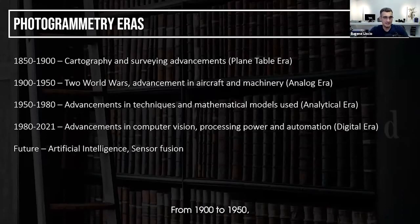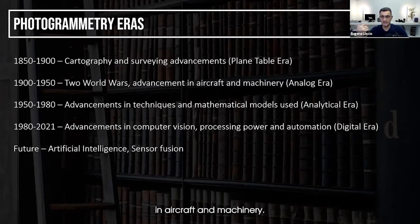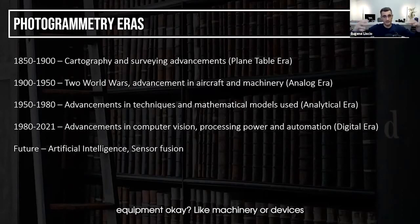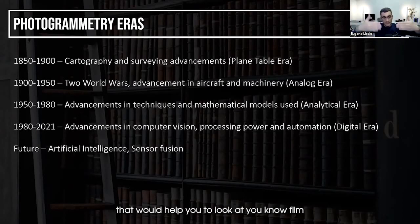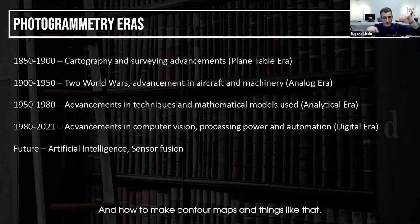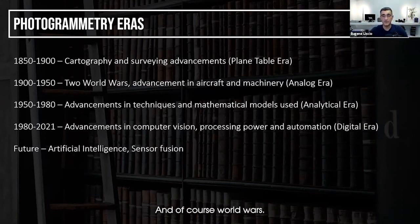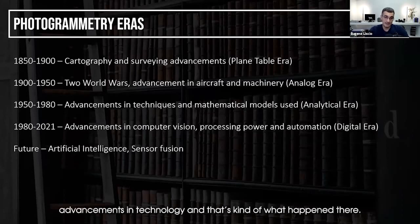From 1900 to 1950, there were a lot of advancements in aircraft and machinery. This is considered the analog era. They started to actually come up with equipment — machinery or devices that would help you look at film, two films in stereo, and how to make contour maps and things like that. Of course, the world wars pushed advancements in technology, and that's kind of what happened there.